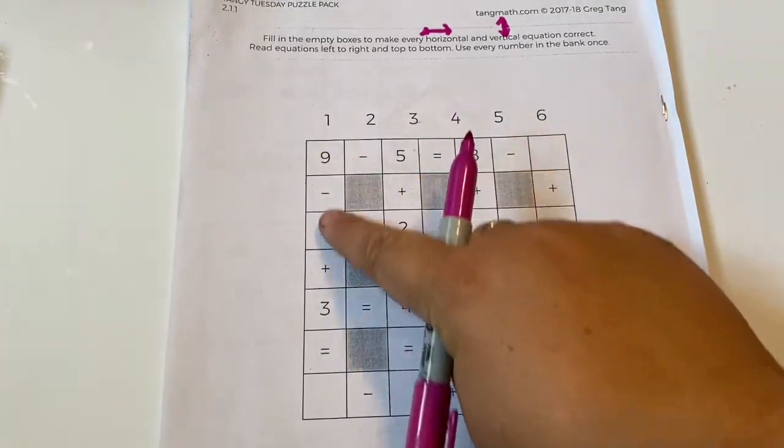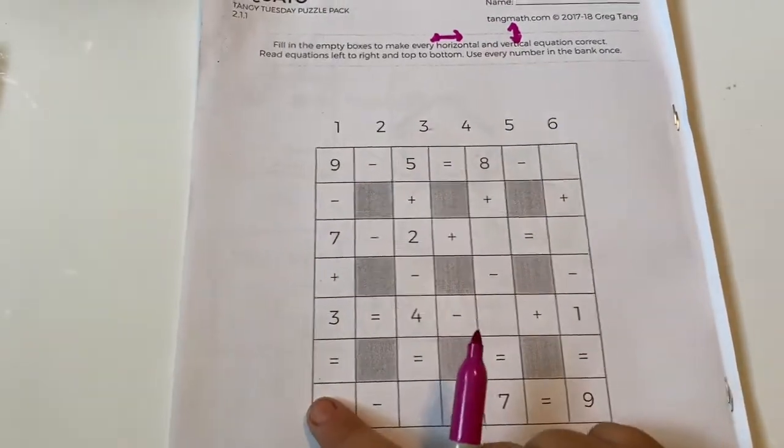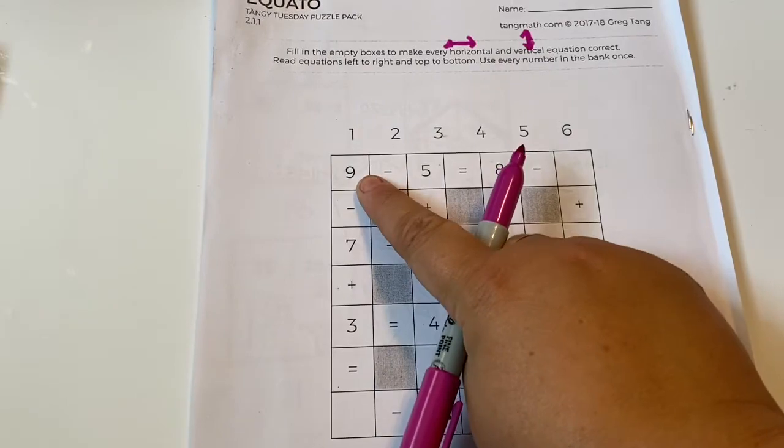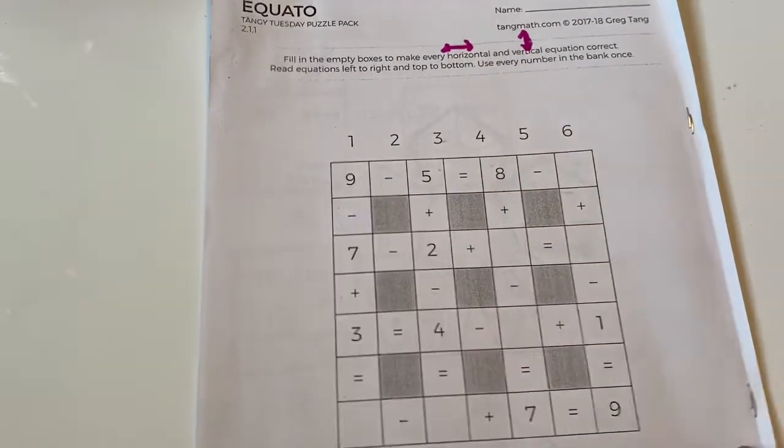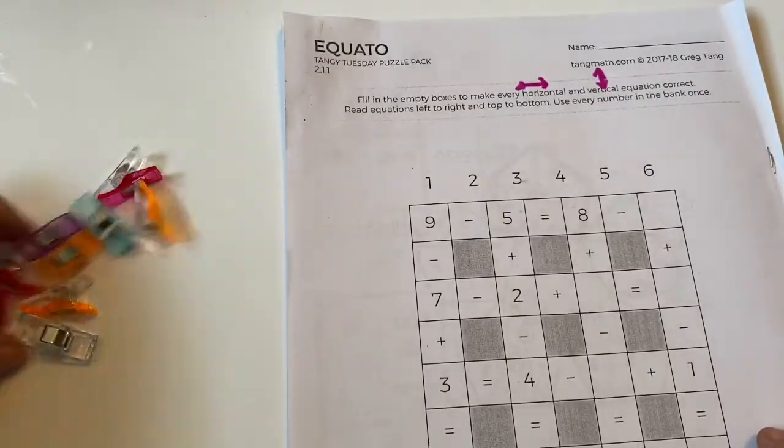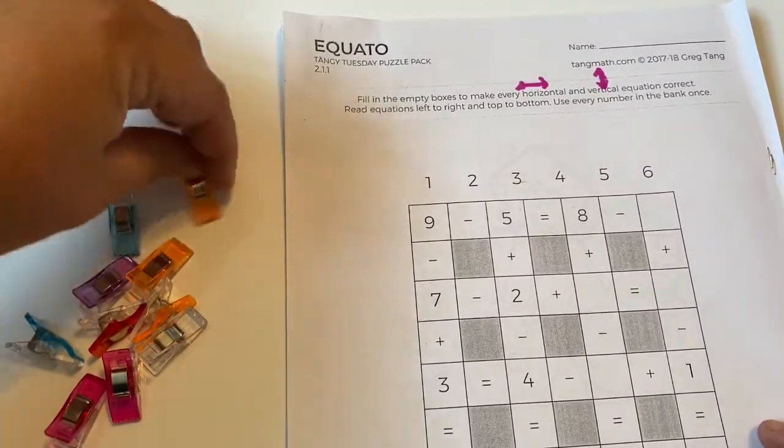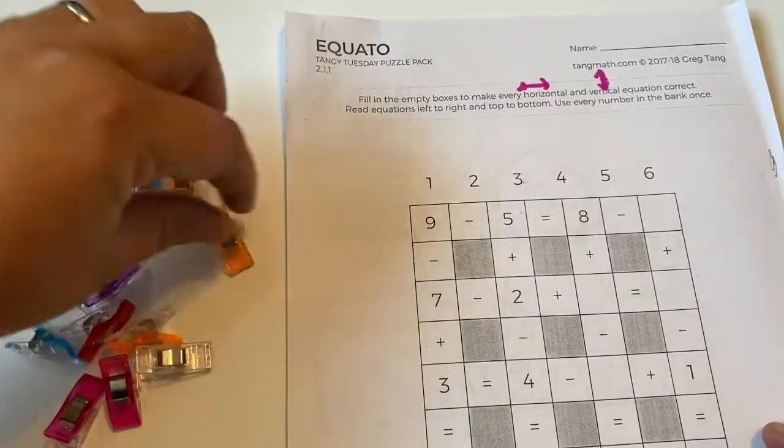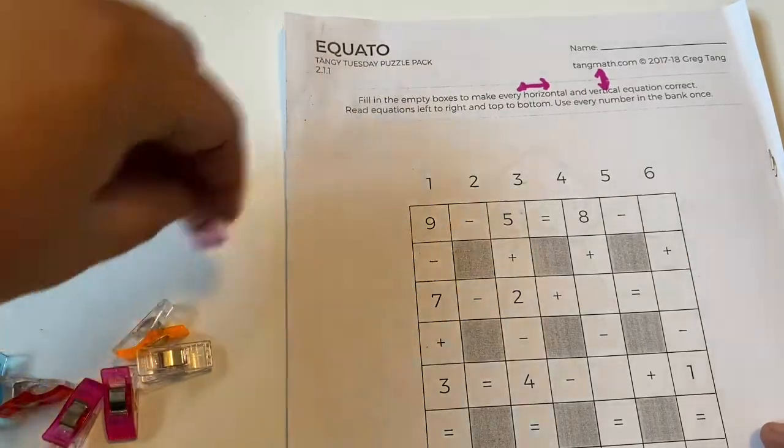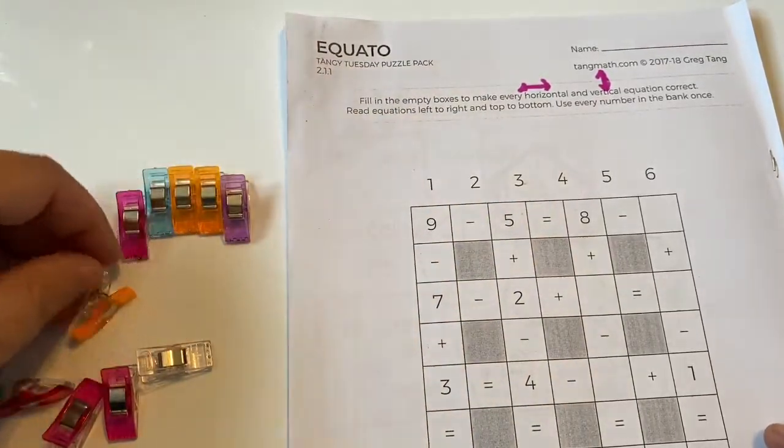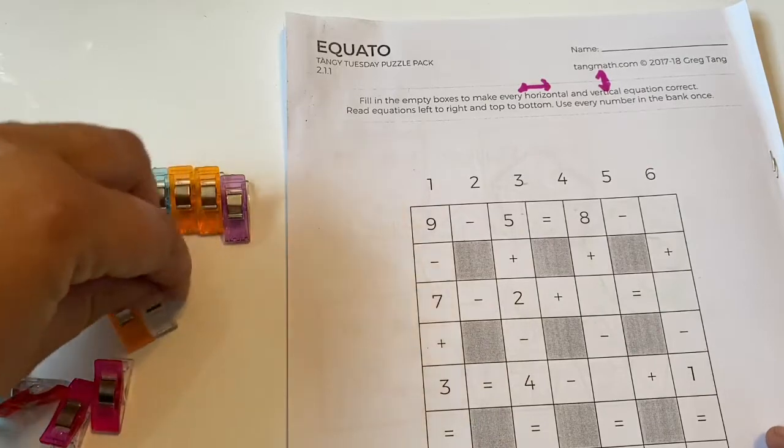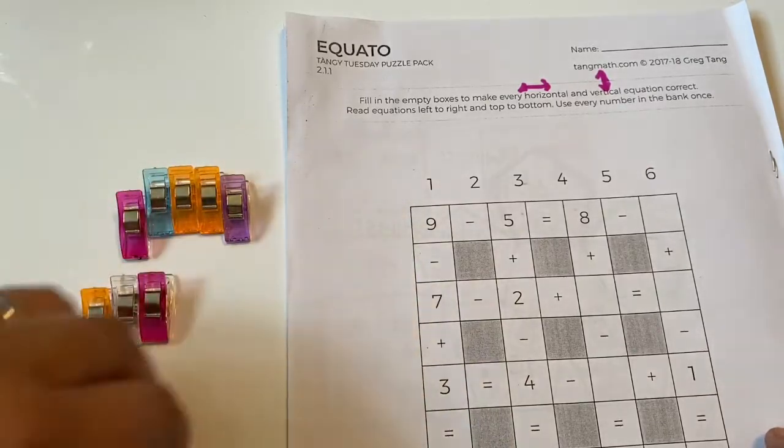So let's see if we can figure this out. I'm gonna go this way first. Nine minus seven. And again, if this is tricky for you, the best thing to do is to use some counters. So I'm gonna have my nine: five, six, seven, eight, nine.